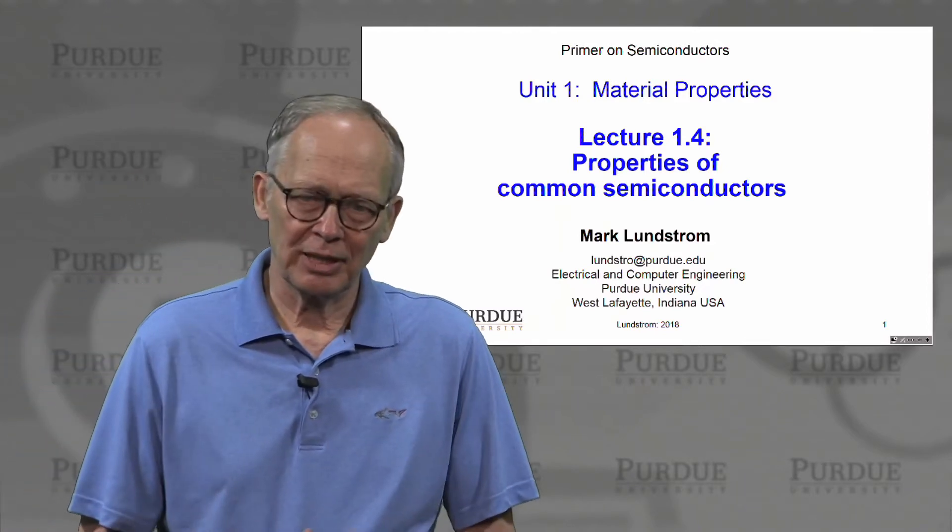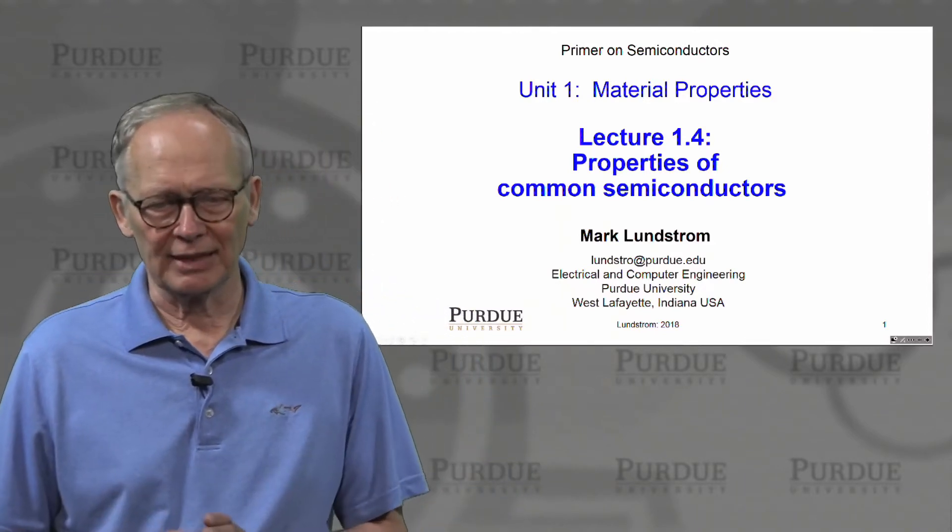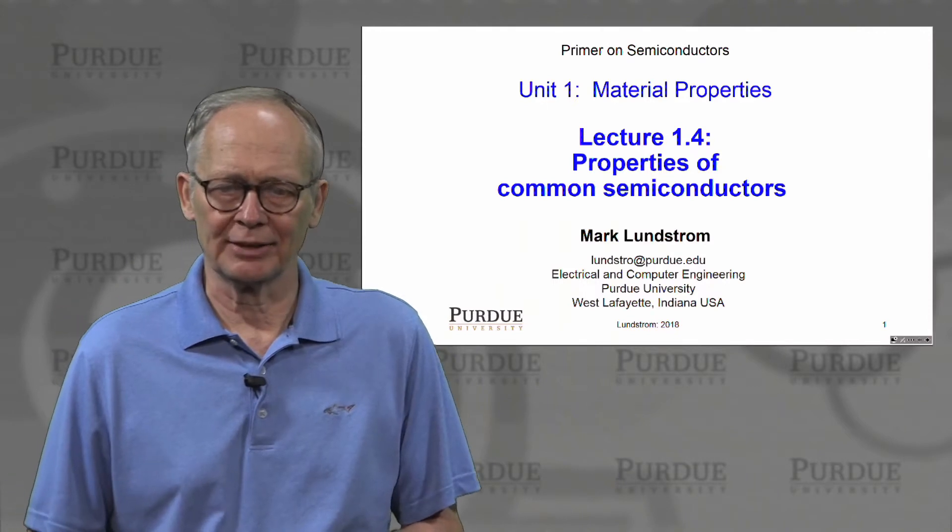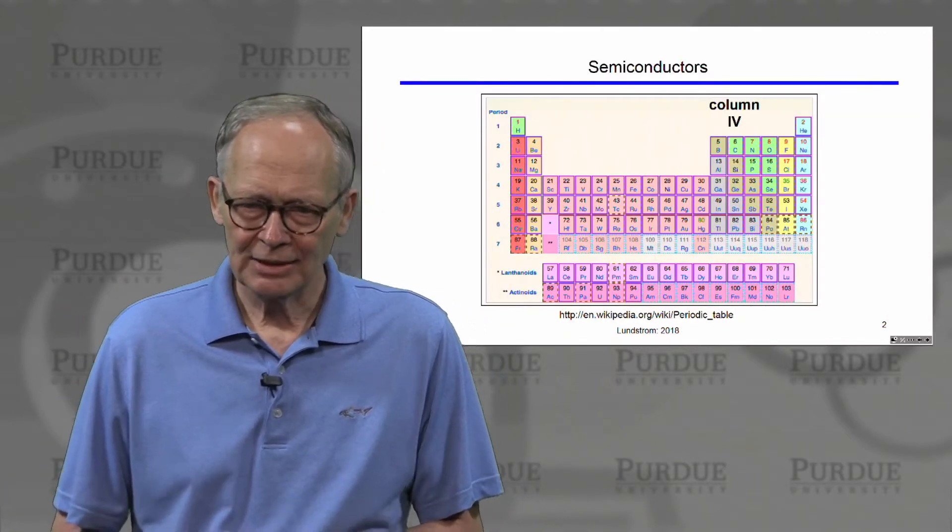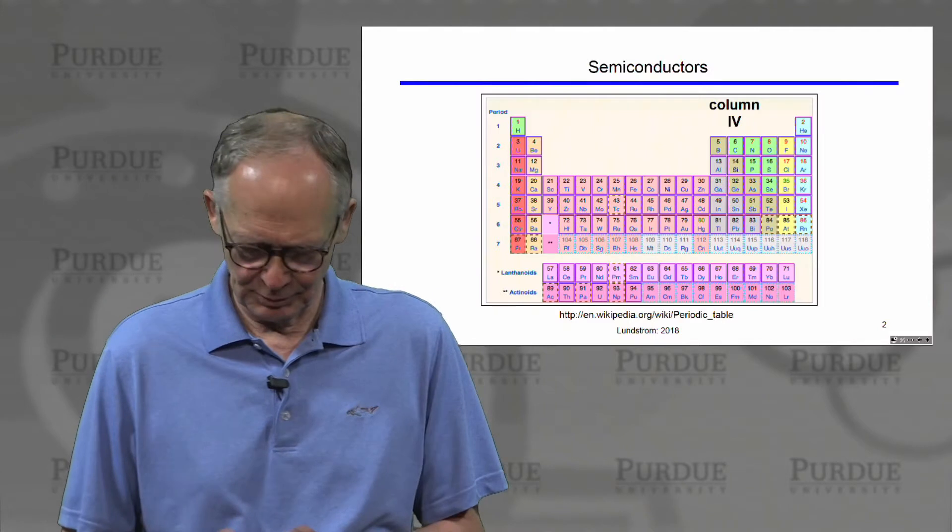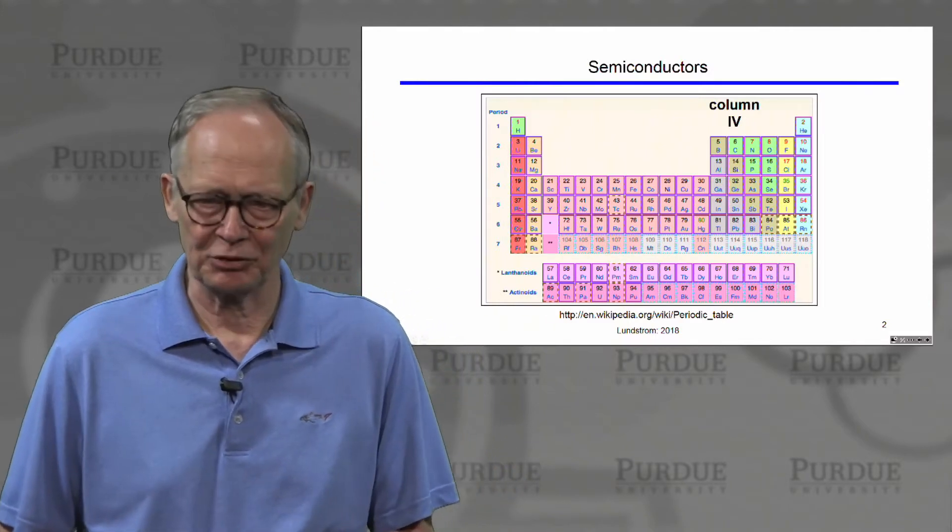So let's continue our discussion by talking about a few of the properties of some of the most common semiconductors. So this is an image of the periodic table. You've probably all seen this in your chemistry courses.